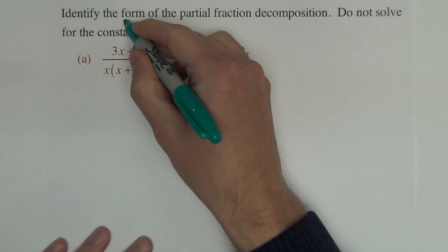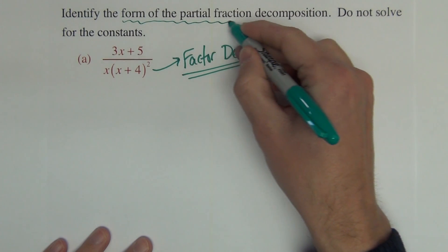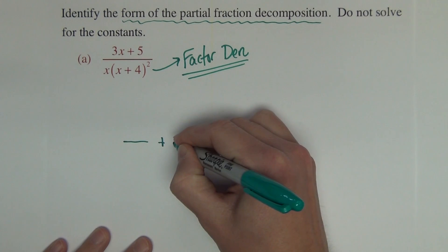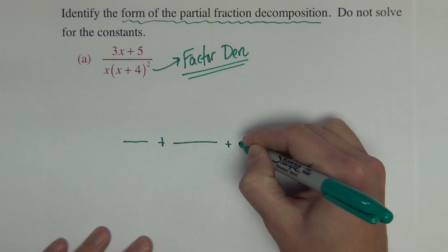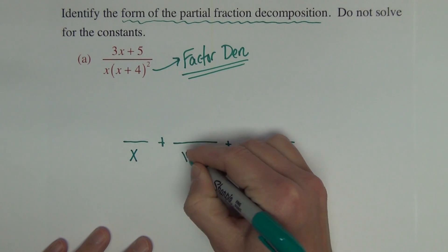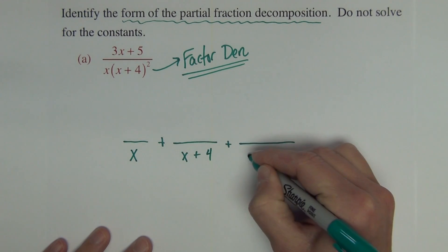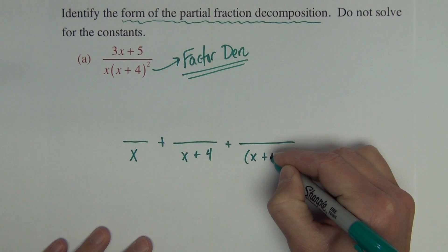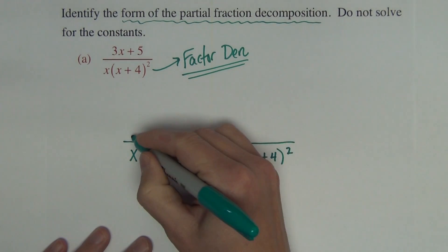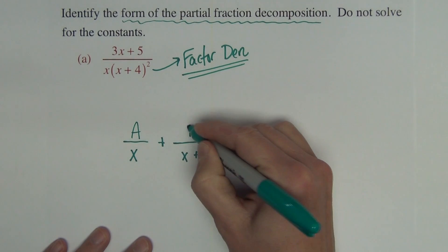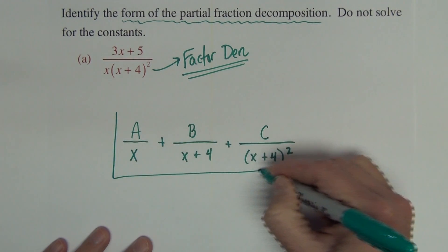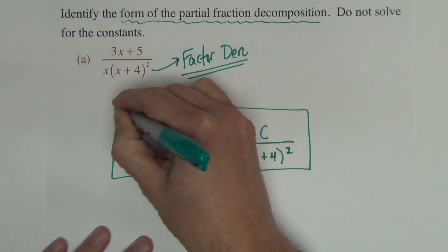The form of the partial fraction decomposition has one fraction for every factor: one fraction for the x, one for the x plus 4, and one for the repeated x plus 4, which will be x plus 4 squared. Since these are all linear factors, they get just single numerical constants in their numerators.